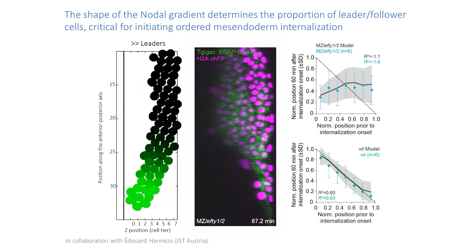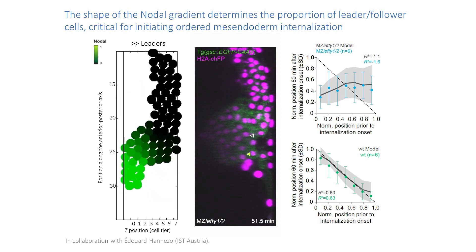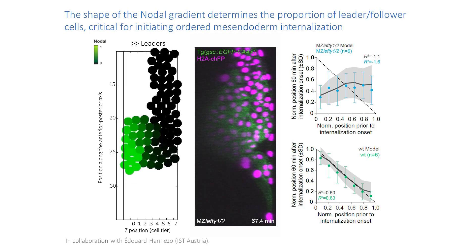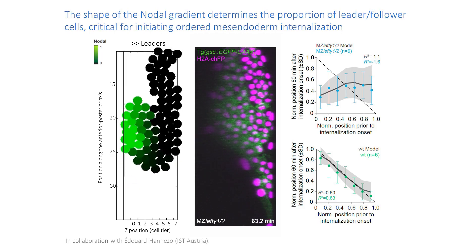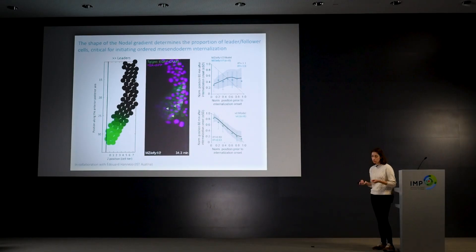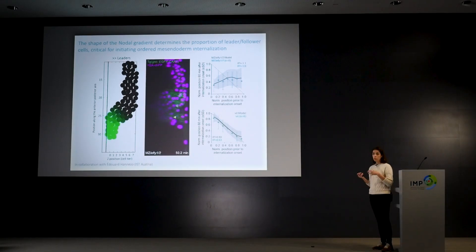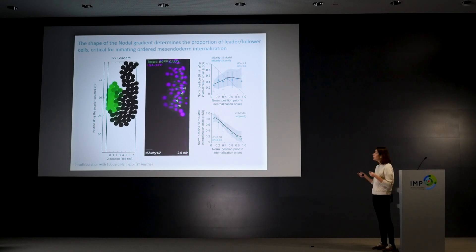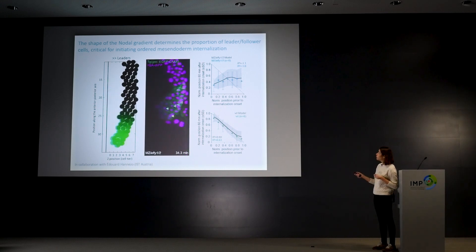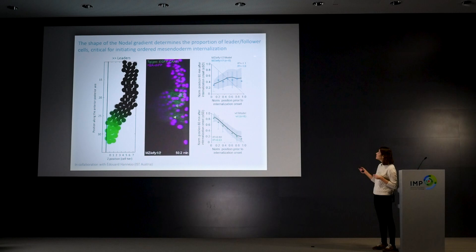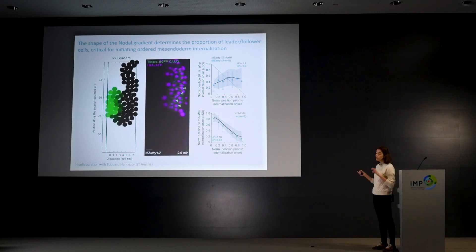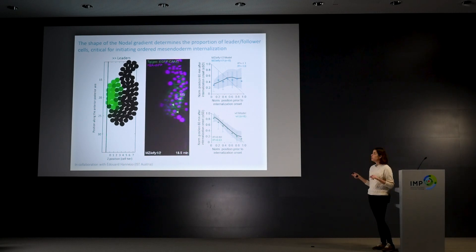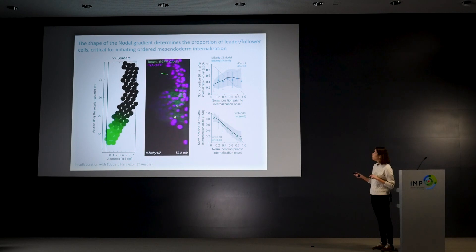This really supports that the relative position of cells is lost and the patterning laid down at the start of gastrulation is now lost during tissue movements. This suggests that not only is the gradient of nodal signaling important to create a gradient of motility, but the shape of the gradient is really important because it sets the proportion of leader to follower cells — the key parameter to initiate tissue movement in a very ordered manner.